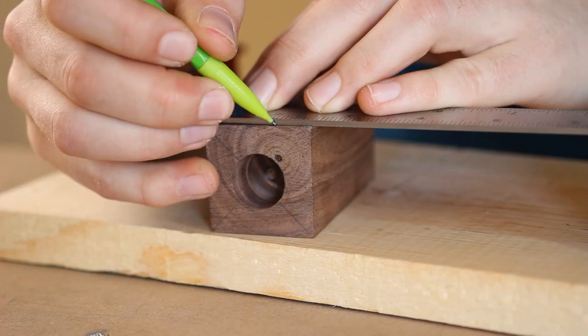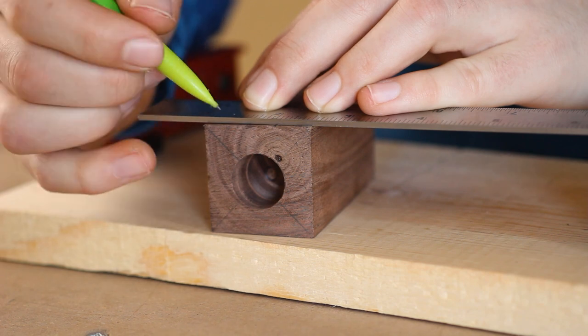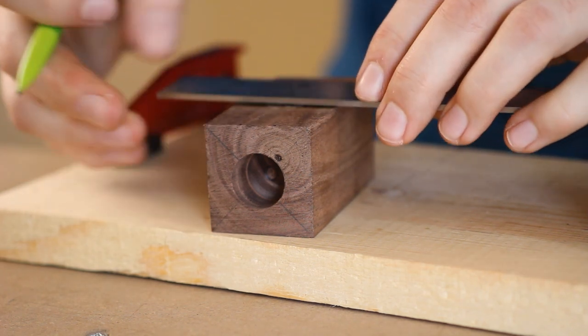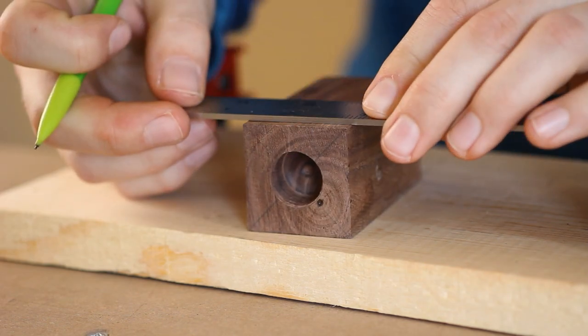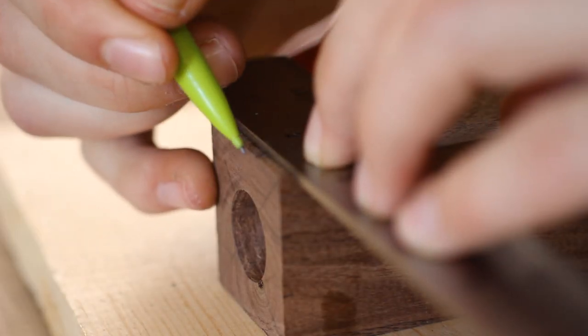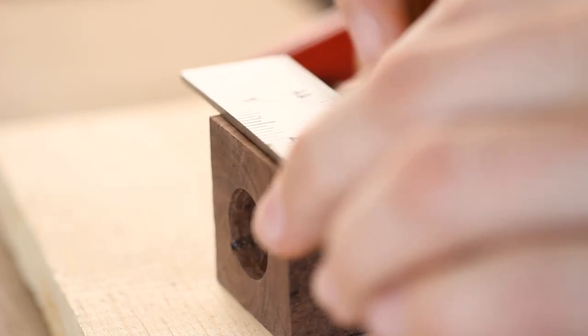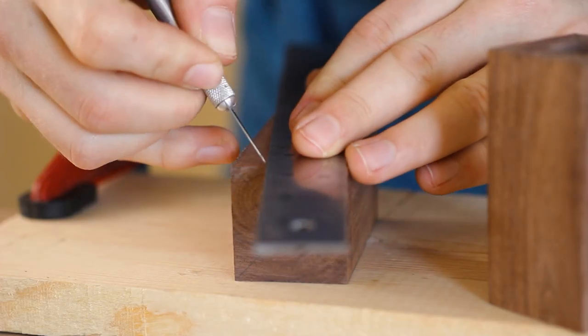Then at the top of all four sides, I'm going to make two marks. This wood is approximately an inch and a half square, so I'll put the marks half an inch in from each edge. Then I'll slice a line from the mark down to the bottom corner.